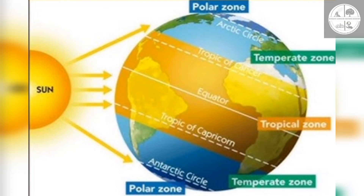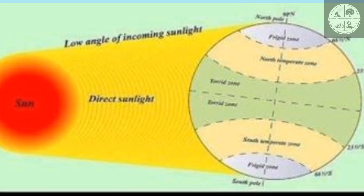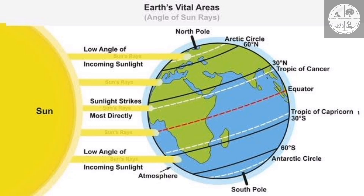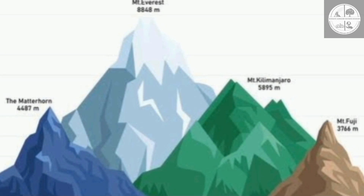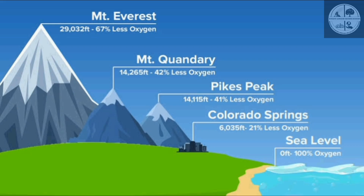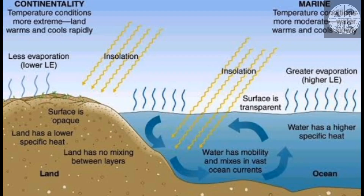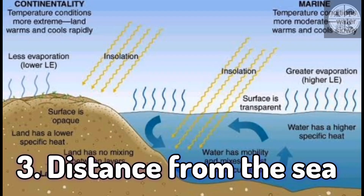As you move toward the poles, temperature decreases. Number two: altitude. Altitude affects temperature and air pressure — the higher you go, the cooler and thinner the air becomes. That's why mountain tops are colder even in tropical regions. Number three: distance from the sea.